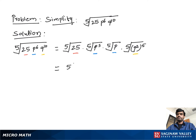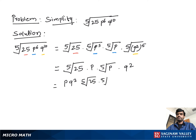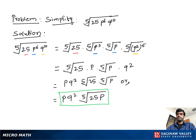Then we get the 5th root of 25 times p times the 5th root of p times q squared. We can write this as p q squared times the 5th root of 25 times p, or equivalently p q squared times the 5th root of 25p. That is our final answer.